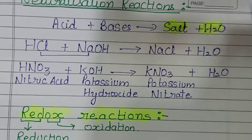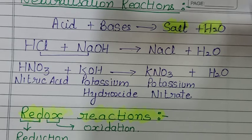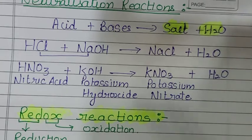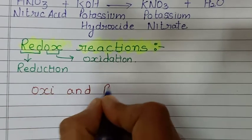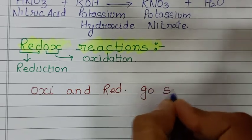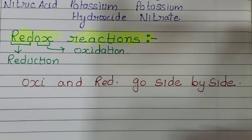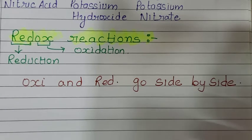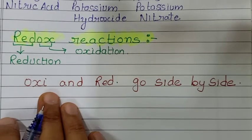Write down the definition: those reactions in which oxidation and reduction go side by side — both reactions exist at the same time — are called redox reactions.